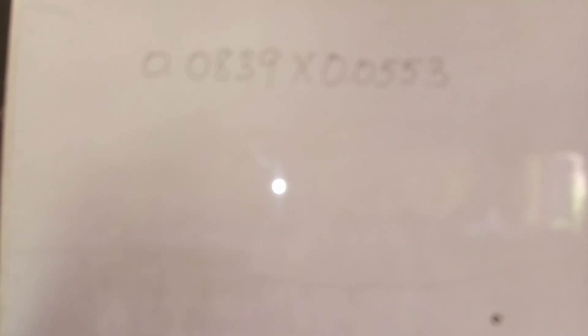This is about logarithms, and of course we are asked to multiply 0.0839 times 0.0553, numbers less than 1. These are logarithms less than 1, and we need to know the characteristics and the mantissa.